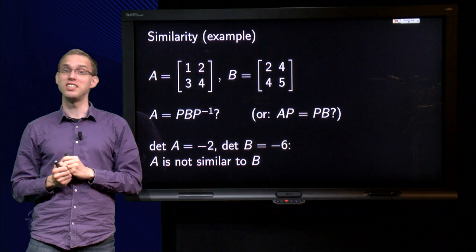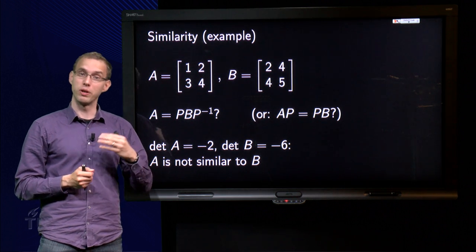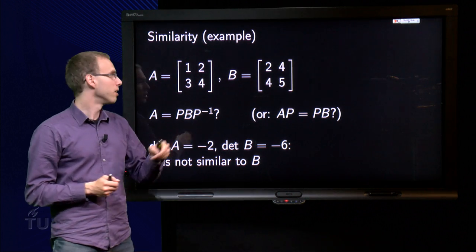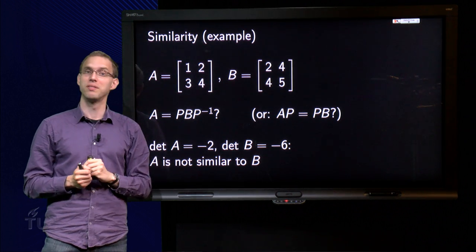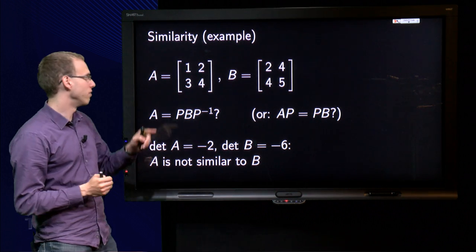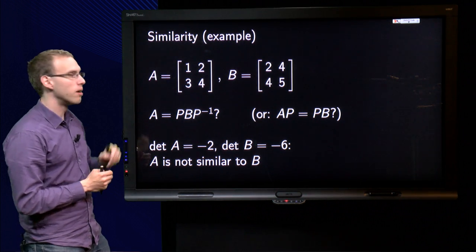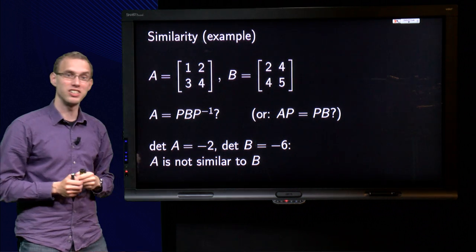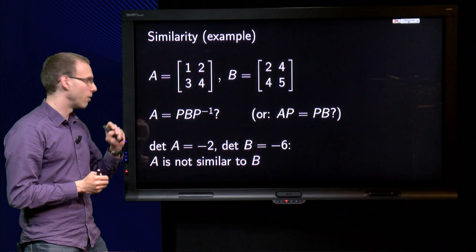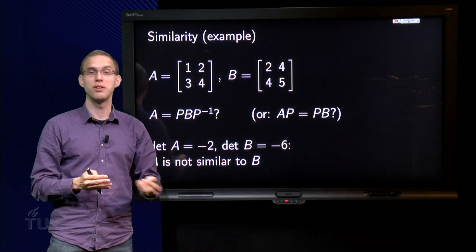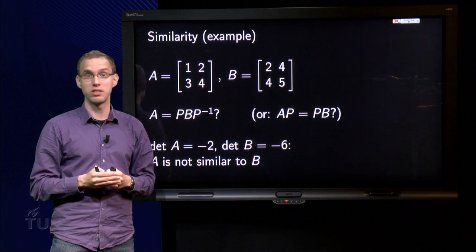We will start with matrices A and B over here. We wonder whether they are similar or not. A is [1, 2; 3, 4], B is [2, 4; 4, 5]. It is always good to check the determinants first, and we see that det A equals 4 minus 6 equals minus 2, det B equals 10 minus 16 equals minus 6. So I know, I don't have to look at anything else. A is not similar to B because the determinants are not the same.